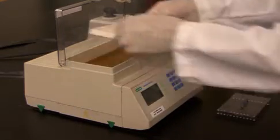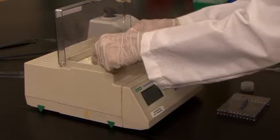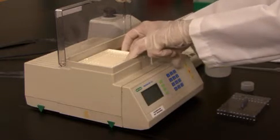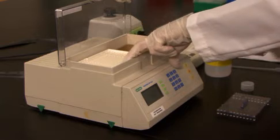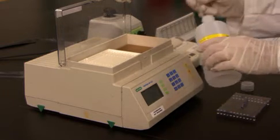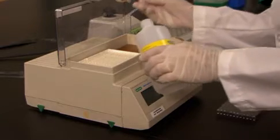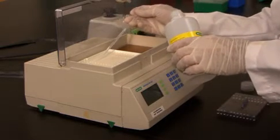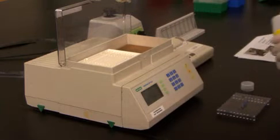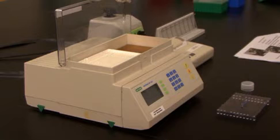Place the focusing tray into the protein IEF cell, making sure to align the positive electrode with the focusing tray with the positive electrode of the protein IEF cell, and add enough mineral oil to cover the strip in each lane. The purpose of the mineral oil is to prevent the strips from drying out during the course of the rehydration and the run.